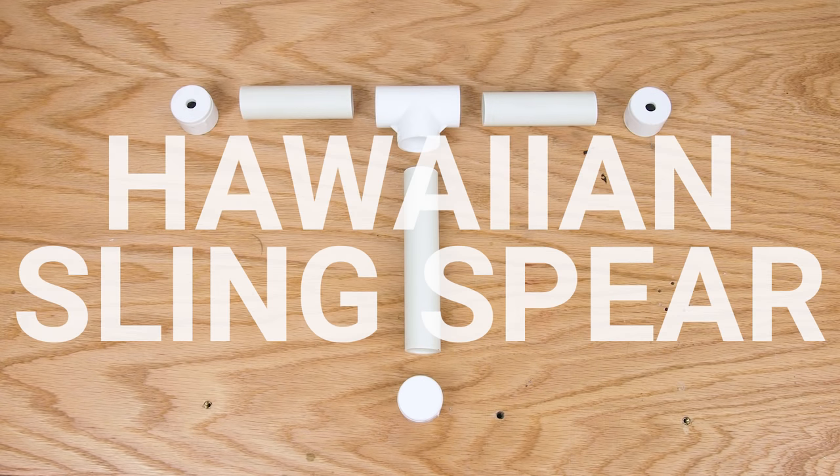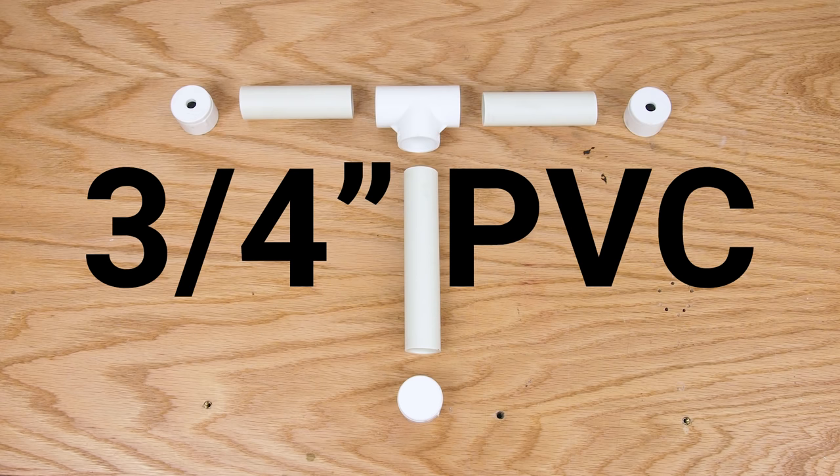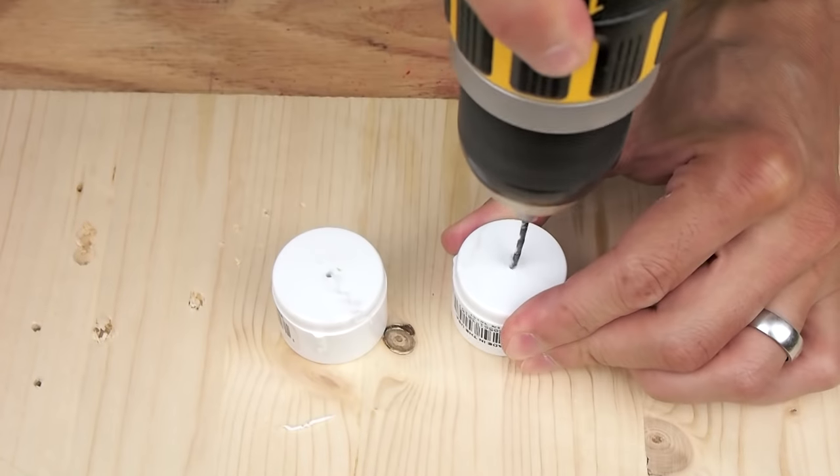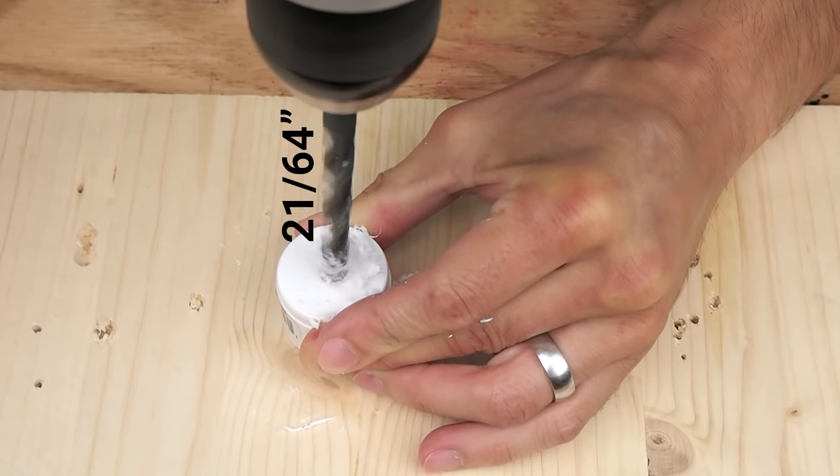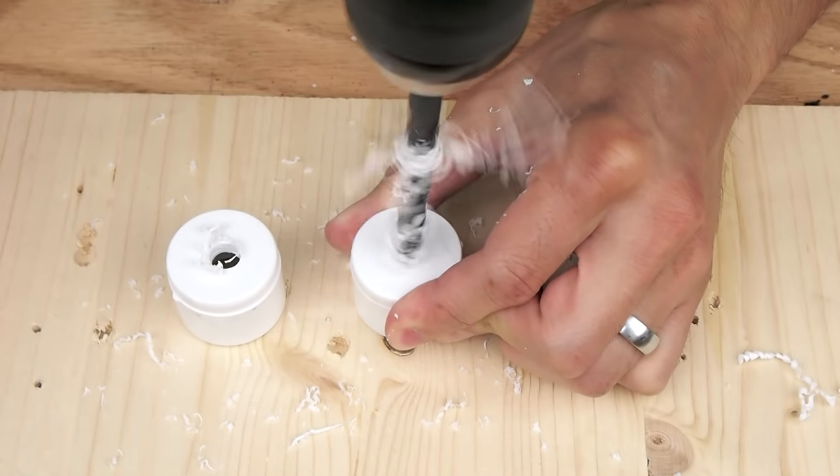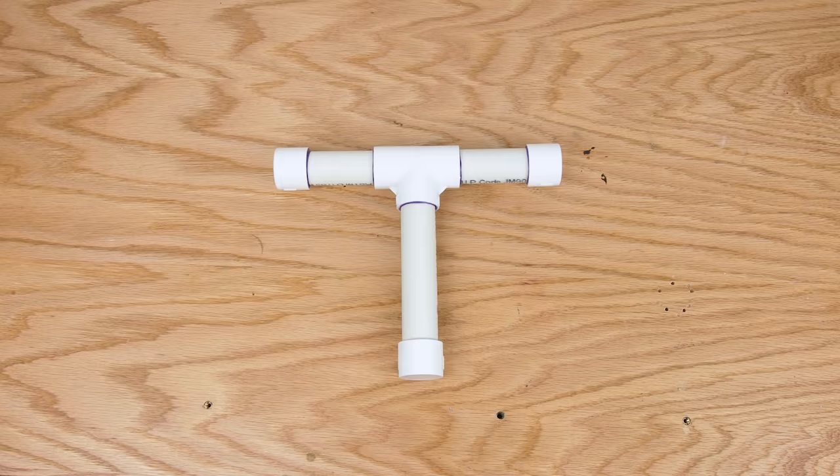Propulsion for the Hawaiian spear is provided by a sling. I made the sling from 3 quarters inch PVC and some fittings. Two pieces of PVC were cut to two and a half inches and one piece was cut to four and a half inches. I used one tee fitting in the middle. I used three end caps, two had holes drilled in them. I started with a small pilot hole then drilled 21/64 inch holes in the center of each end cap. All the pieces were glued together with PVC cement and allowed to dry.